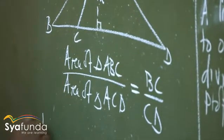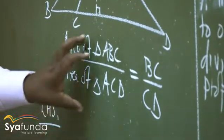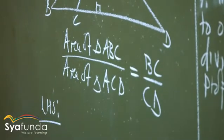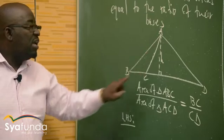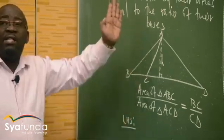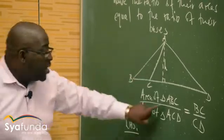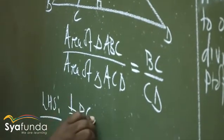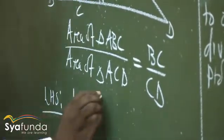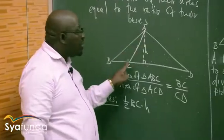Let's do this together. We're taking the left-hand side. Let's write it down. The area of triangle ABC will be half base times perpendicular height. In this case, the altitude is H. So the area of triangle ABC equals half times BC times H. We need to prove that the left-hand side reduces to simply the ratio of the bases.